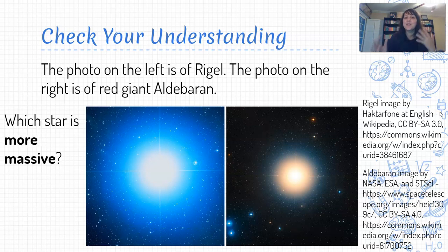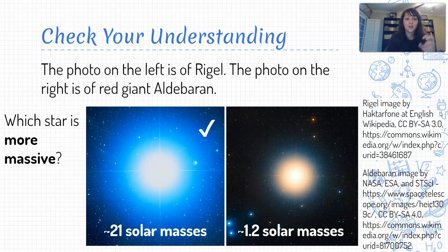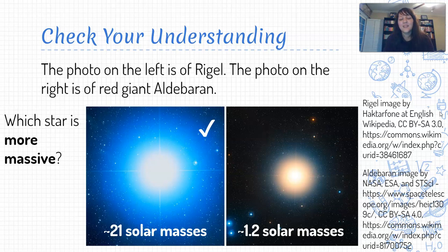Last question: which of these two stars is more massive? The fact that Aldebaran is a red giant — not a red supergiant — suggests it was created from an average mass star, whereas Rigel being blue is a more massive star. Rigel is on the order of 21 times the mass of our sun, whereas Aldebaran is just a little bit more massive than our sun. So Rigel wins that particular battle.